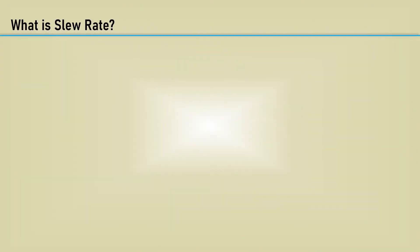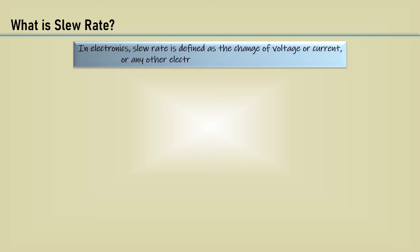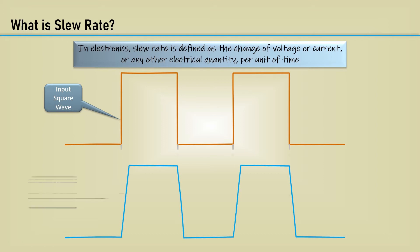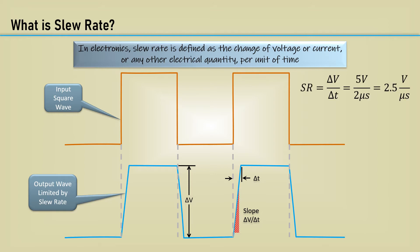So what is slew rate? In electronics, slew rate is defined as the change of voltage or current or any other electrical quantity per unit time. Let's say you have a square wave input to a system. The output wave will be limited in rate of change. It is a delta voltage with respect to a delta time, and is therefore the slope delta V over delta T. As an example, let's say we have a change of 5 volts in 2 microseconds, which is 2.5 volts per microsecond.